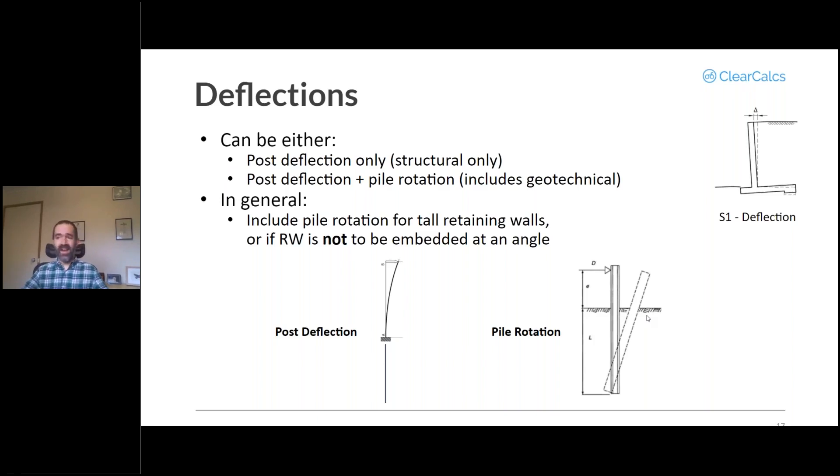In general - this is not a hard and fast rule, it's not defined by the standard - you would include that pile rotation for particularly tall retaining walls, where failure is a bigger deal, or if you are not embedding that retaining wall at an angle. Quite commonly for shorter retaining walls, you might embed your sleeper retaining wall to begin with at a five degree angle towards the soil, towards the backfill a little bit.